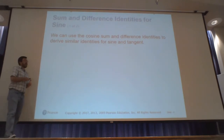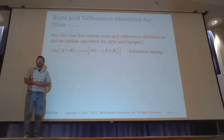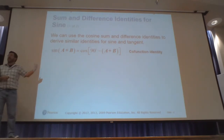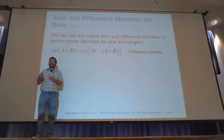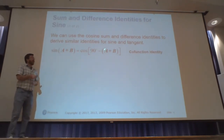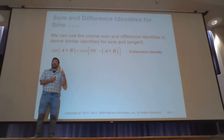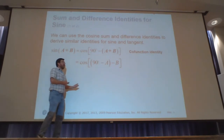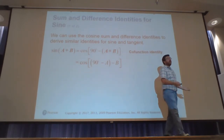We're going to use the cosine sum and difference identities to derive the ones for sine and tangent. I know that sine of A plus B can be written using the co-function identities — sine of theta is the same as cosine of 90 degrees minus theta. So sine of A plus B equals cosine of 90 degrees minus all of A plus B. Distributing the negative gives 90 degrees minus A minus B, which I can regroup as cosine of (90 degrees minus A) minus B.